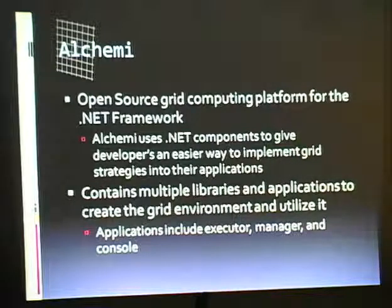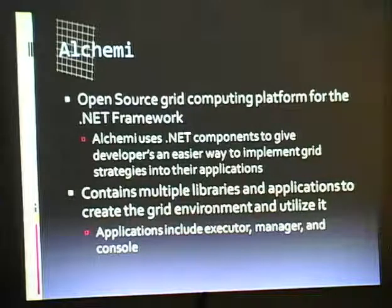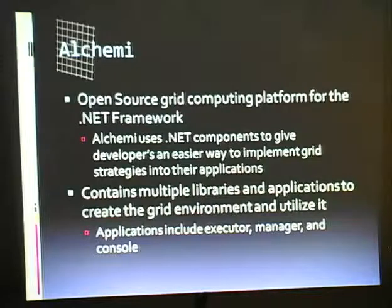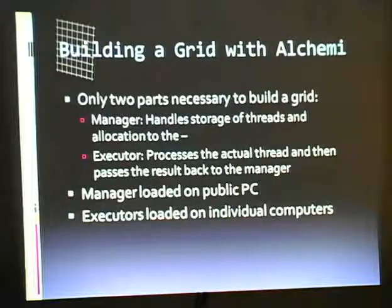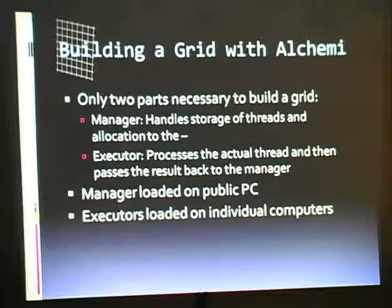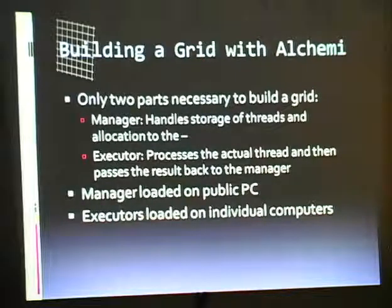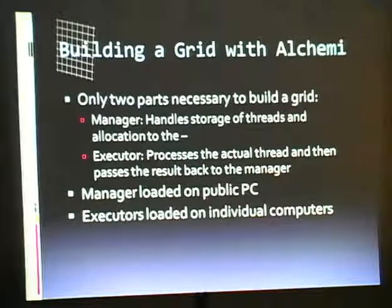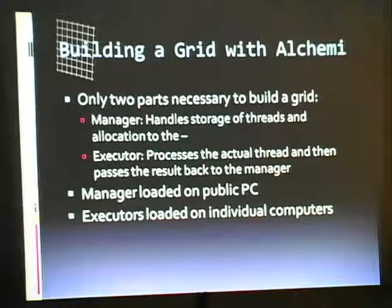Alchemy contains multiple libraries and applications. There are really only two applications absolutely necessary to run an Alchemy grid: an executor and a manager. A third piece is the console, which allows you to manage your grid. The manager handles storage of the threads and allocation of those threads to the executors, which process the threads and pass information back to the manager, which passes it back to your application. When coding your parallel code, you submit all threads to the manager — you don't need to know how many nodes you have, their names, IP addresses, or credentials. All you need is your credentials to the manager, and the manager handles everything.